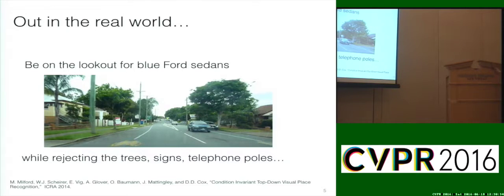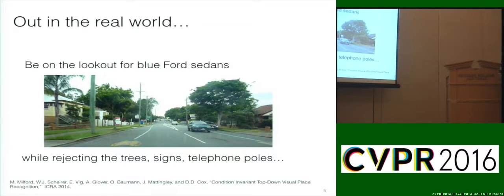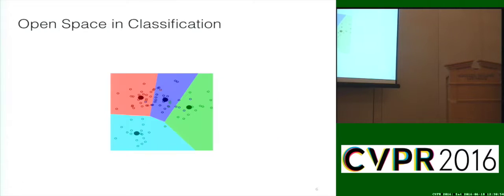An open set recognition scenario would be: look for blue Ford sedans in an image while rejecting trees, signs, telephone poles, and all these other things that were extraneous to the detection task. This is a very common setup for natural or biological vision — we do this all the time as people — but something machines are just not well adapted to at the moment.